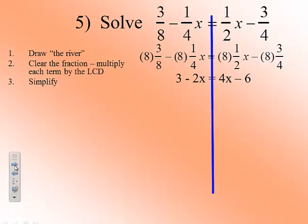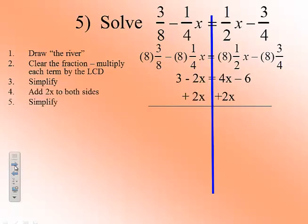Now, the next thing that we want to do is determine which variable we're going to move. And probably it'll be easier to add a 2x to both sides. And when we do that, we find that we have 3 equals 6x minus 6. The next thing that we want to do is undo that minus 6. So we're going to add a positive 6 to both sides.